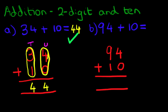Let's label the columns again. We've got the units on the right-hand side and then we've got the tens. And as we did in the first example, we're going to add each column in turn, starting with the column on the right-hand side first. So what is 4 plus 0? Well, the answer is 4.